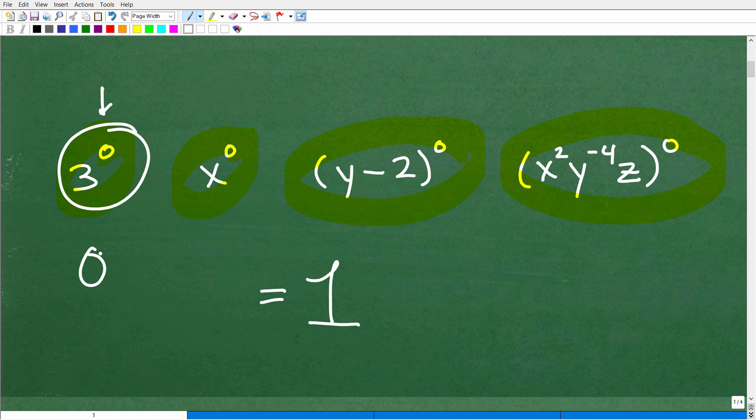You've got to remember that anything to the 0 power is 1, and the property looks like this. A to the 0 power is equal to 1, and this is one of the properties of powers and exponents that you need to know.